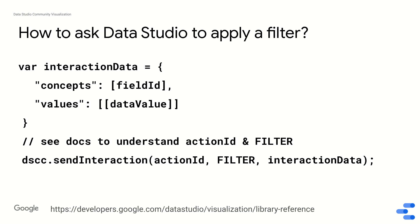Interaction data has two keys: concepts, which is an array of dimension IDs, and values, which is an array of arrays of values. Together they tell Data Studio what the parameters for applying that filter look like.